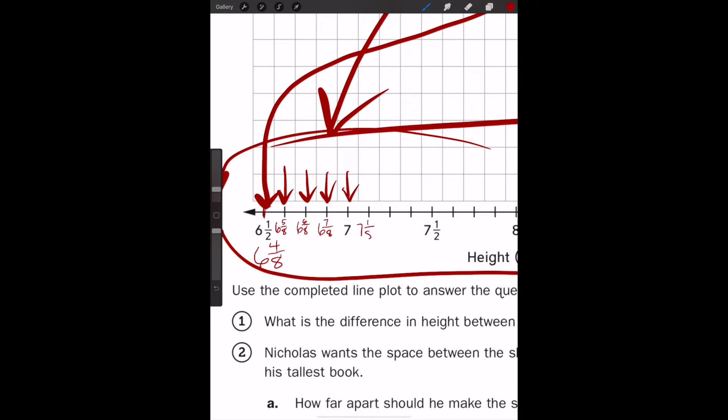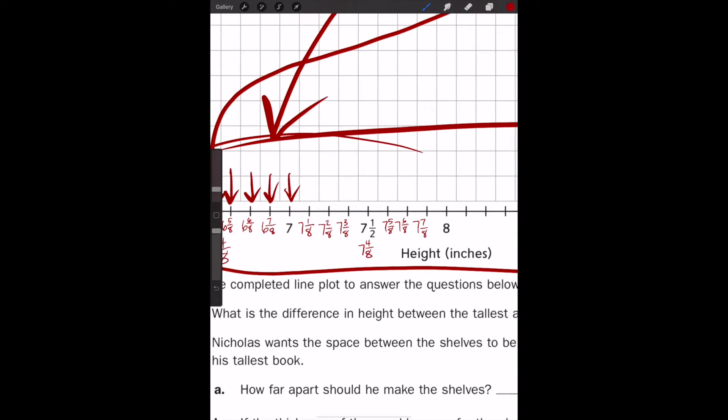If you said 1/8, you are correct. 7 and 2/8, 7 and 3/8, 7 and 5/8, 7 and 6/8, 7 and 7/8, and look what we have next. Next, eight. So I am going to continue on and finish my line plot, numbering it. And I would like you to press pause and do that as well. And when you are finished, come on back and check your work.